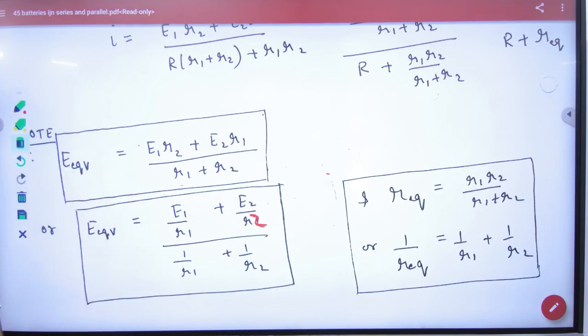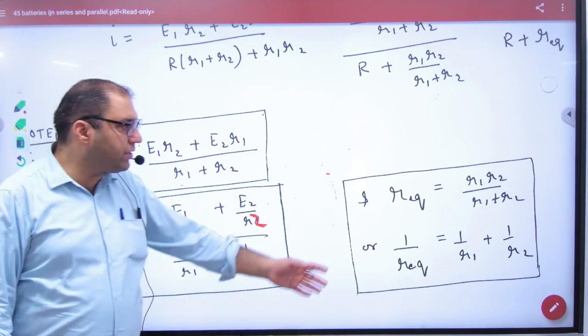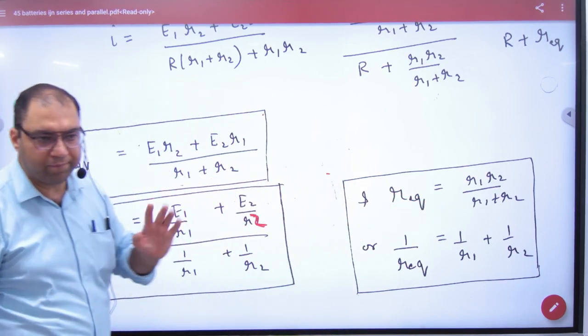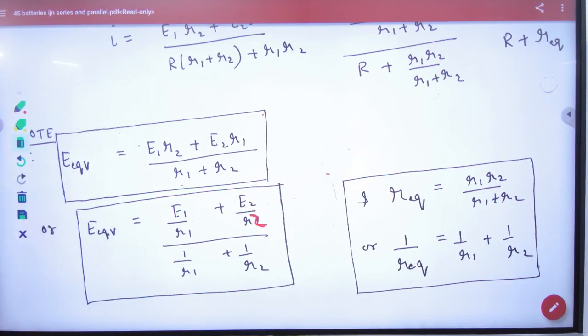I will tell you why. In parallel, the battery should be left straight or reversed. R equivalent will remain. Internal resistance will remain in parallel.